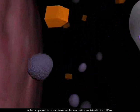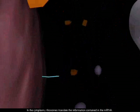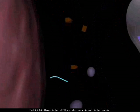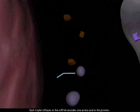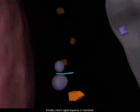In the cytoplasm, ribosomes translate the information contained in the mRNA. Each triplet of bases in the mRNA encodes one amino acid in the protein.